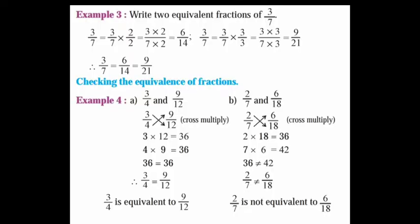Example 3. Write 2 equivalent fractions of 3/7. So, 3/7 multiplied by 2/2: 3 times 2 is 6, and 7 times 2 is 14. Next, multiply by 3: 3 times 3 is 9, and 7 times 3 is 21. Therefore, 3/7 is equal to 6/14, that is equal to 9/21.